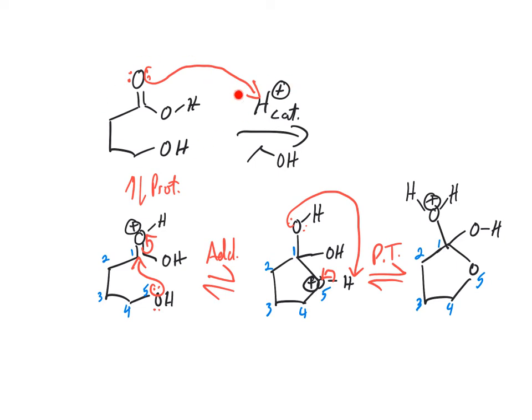Ideally, you'd be able to look at this and immediately draw the product. And that would help you do the mechanism. You should be able to do that. That way you know exactly where you need to go. So we probably all know we're going to lose this. This is going to get kicked off. But then to regenerate a catalyst, we also lose that H at the same time.